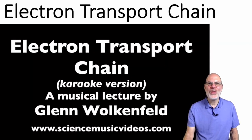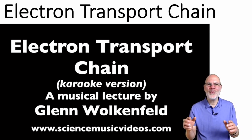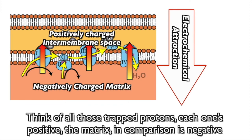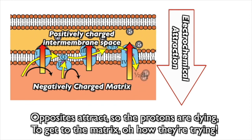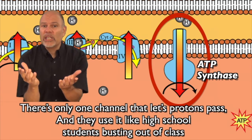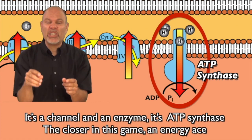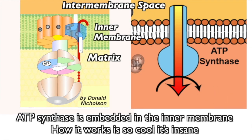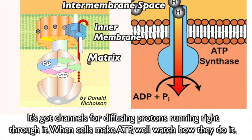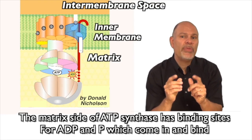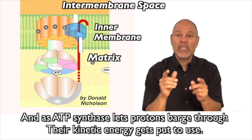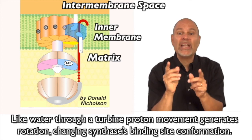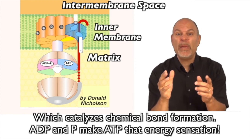ETC Song Finale: Think of all those trapped protons — each one's positive. The matrix in comparison is negative. Opposites attract, so the protons are dying to get to the matrix. There's only one channel that lets protons pass — they use it like high school students busting out of class. It's ATP synthase, the closer in this game, an energy ace. ATP synthase is embedded in the inner membrane. It's got channels for diffusing protons; as protons barge through, their kinetic energy gets put to use — like water through a turbine — generating rotation, catalyzing bond formation: ADP and P make ATP.